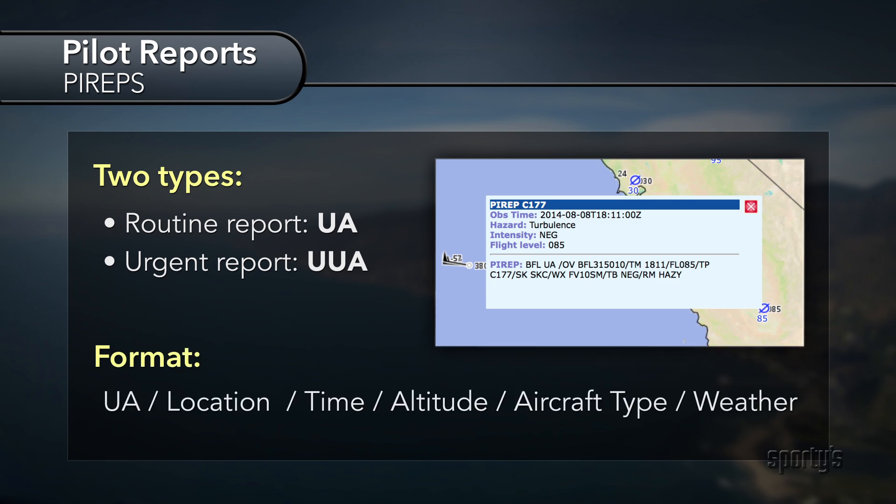Following the letters UA or UUA will be the location, time, altitude, aircraft type, and weather reported. Elements not reported are omitted from the report.